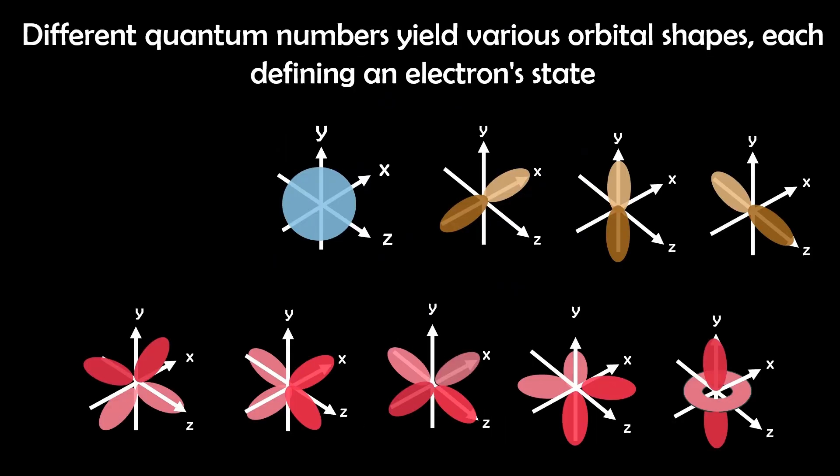We learned that with an increasing number of electrons, different quantum numbers yield various orbital shapes, each defining an electron state in an atom, essentially its energy and probable location.